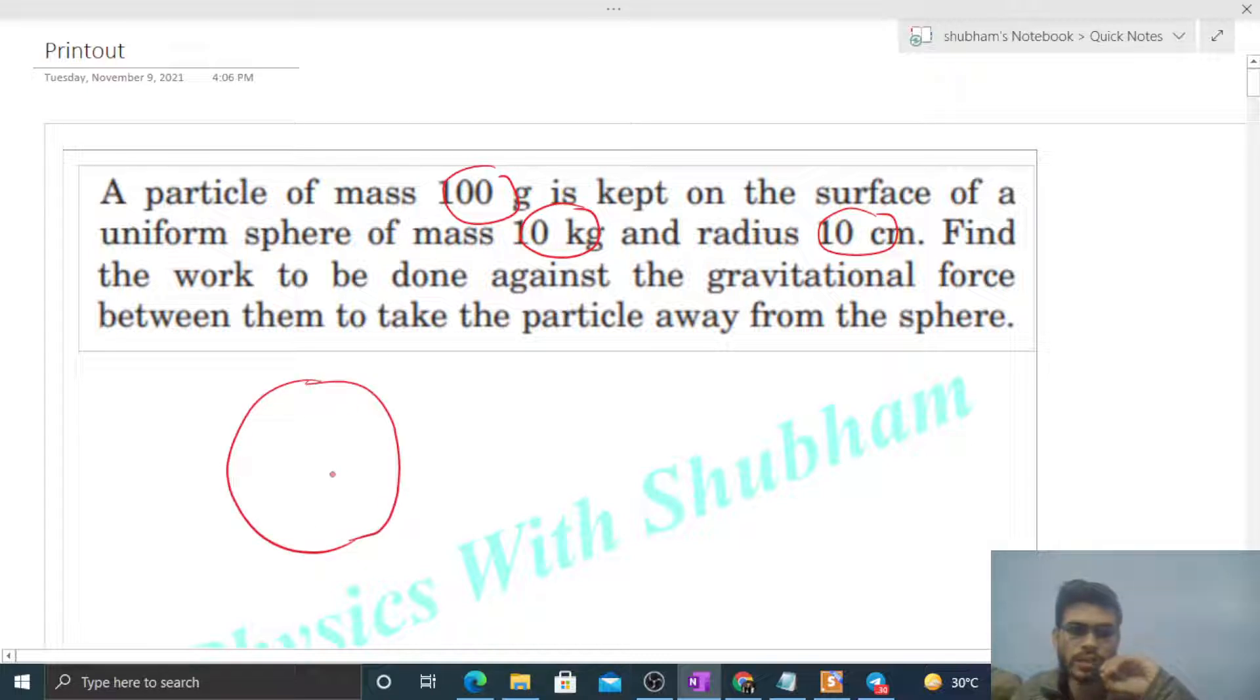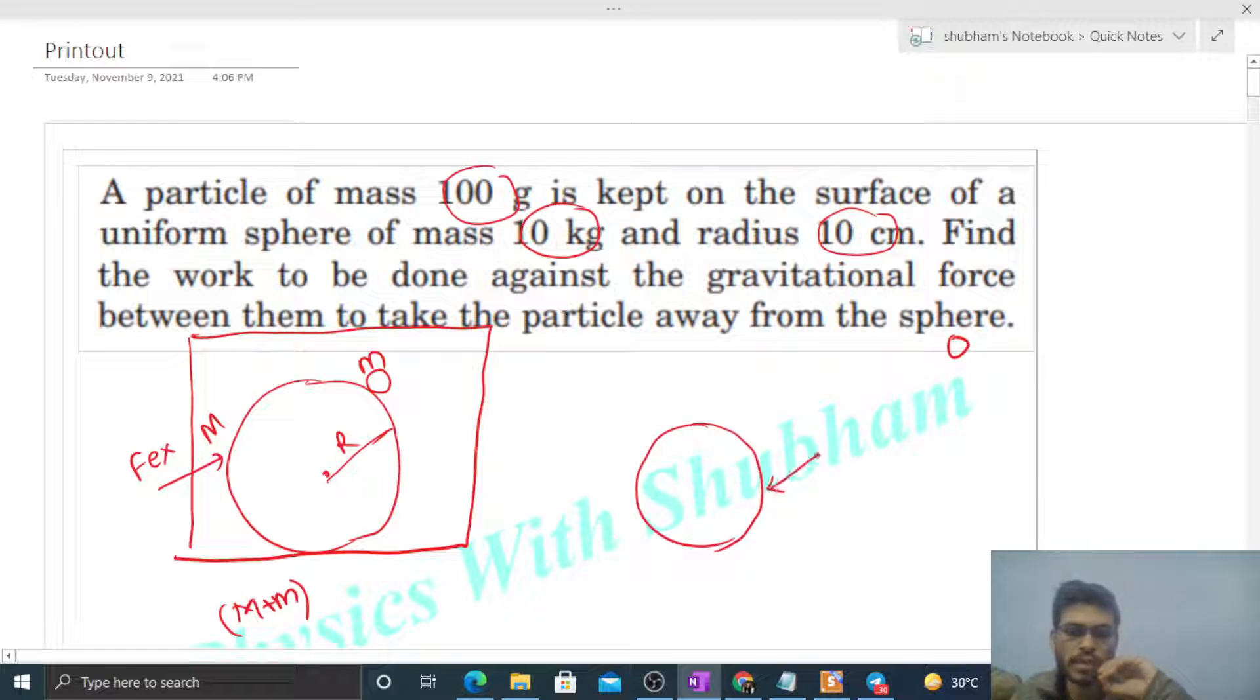So this is a sphere, let's say of mass capital M and radius capital R. And this is my system. Let me define my system: I am taking capital M plus small m as my system. Now if an external force acts on the system so that the particle and the sphere separate at infinite distance from each other. So if we talk about this is my initial state of the system and this is my final state of the system.